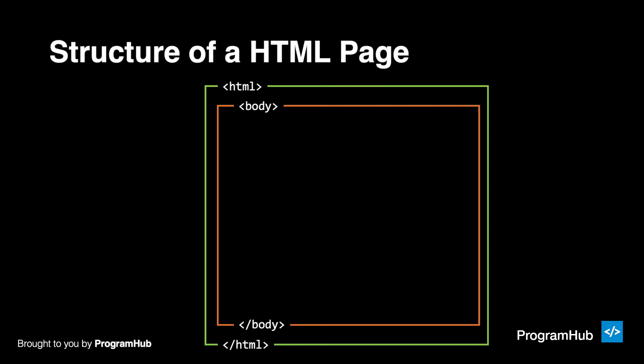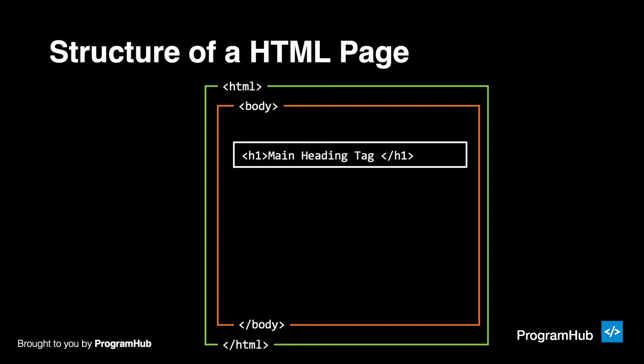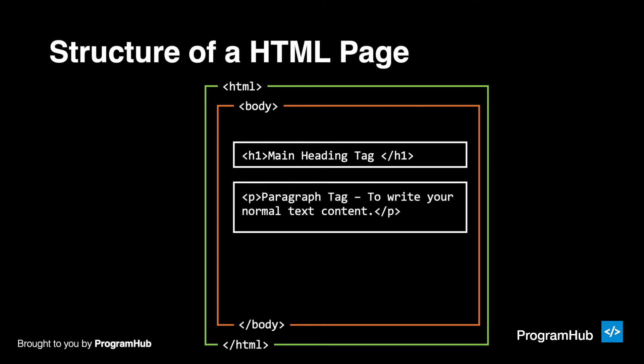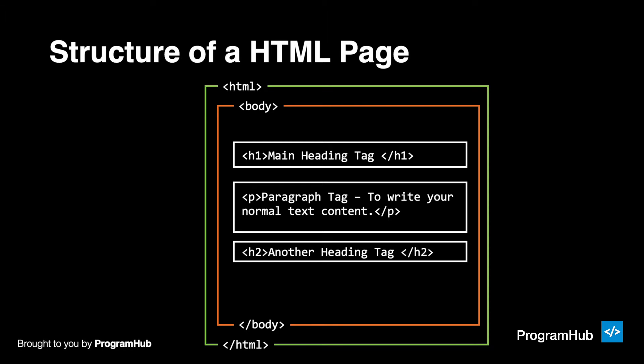Whatever content we need to display on our website comes right inside the body tag. For example, if you want a heading, it will come inside the body tag. If you want a paragraph, it will come inside the body tag. We can also have a heading 2, which is a subheading. Inside the body tag we can have a lot of things like images, links, buttons, videos, and more content. So whatever we want to display on our website will all come right inside the body tag.